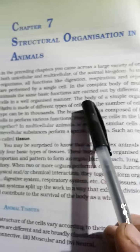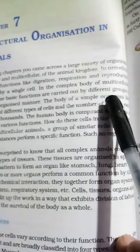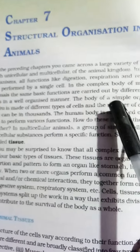In complex body multicellular animals, the same basic functions are carried out by different groups of cells in a well-organized manner.